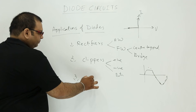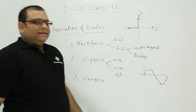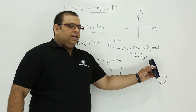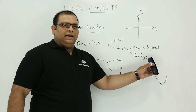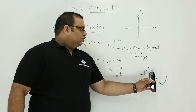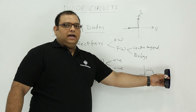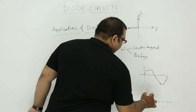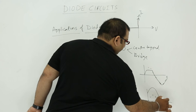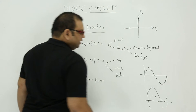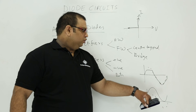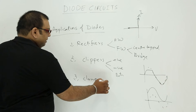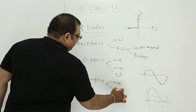The third application is clampers. When you take a waveform whose average value is zero, and you want to shift that average value to plus one, plus two, minus one, or minus two, we use clampers. The input waveform is shifted so the output waveform is clamped to some voltage level. We have positive clampers as well as negative clampers, and all these circuits are designed using diodes.